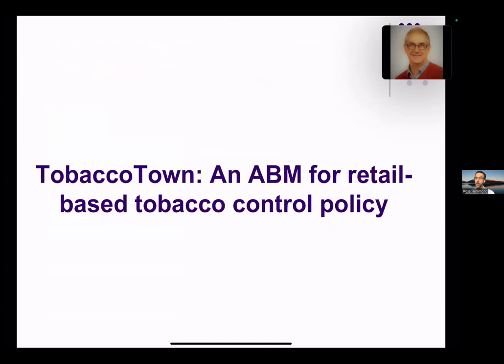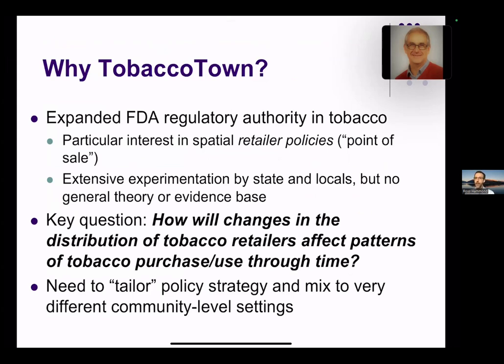Now I'm going to talk about a specific agent-based model called Tobacco Town, developed to study retail-based tobacco control policy. The Food and Drug Administration has regulatory authority over tobacco in the US. One of the leading contenders in the current policy environment are spatial density retail policies — so-called point-of-sale policies that try to reduce availability and prominence of tobacco in the physical environment. There's lots of experimentation underway by states and large cities, but no general theory about what exactly these interventions will do and which combination works best and for whom.